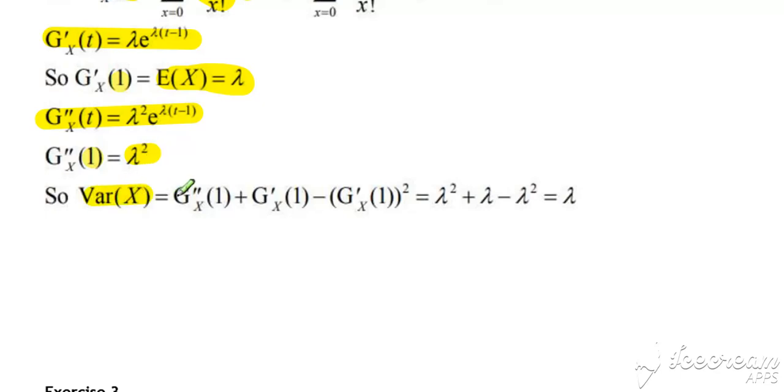Variance is equal to second derivative with 1 in plus first derivative with 1 in minus first derivative with 1 in squared. So, we get lambda squared plus lambda minus lambda squared, which is equal to lambda.